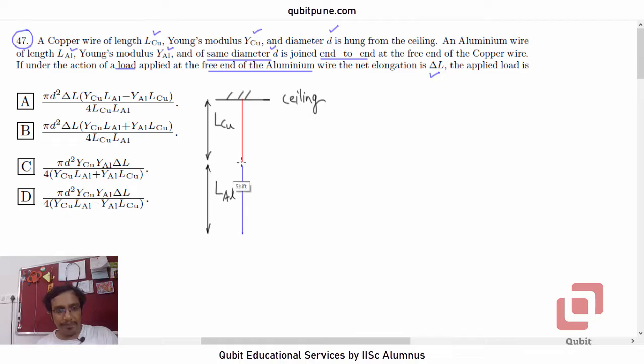So, at the free end of the aluminum wire, a load is applied. Let us denote that load as P. So, we have to determine this load P.